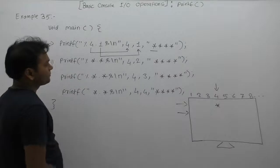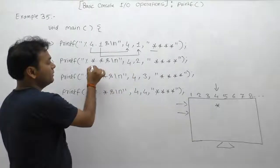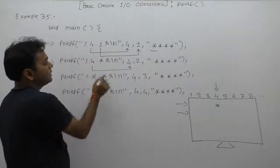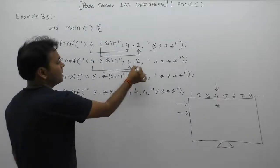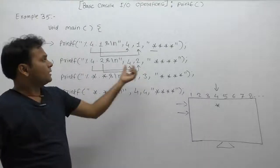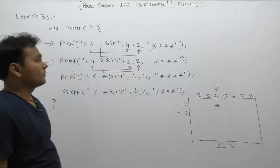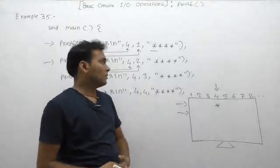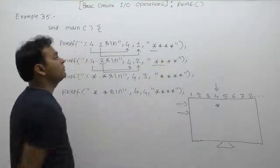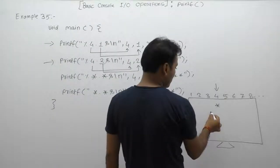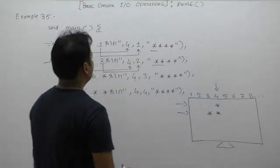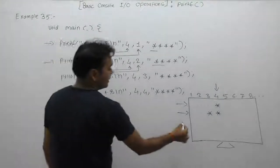According to the second printf, in place of the first star we substitute the first argument value as four, and the second star is replaced by the second argument value two — it becomes like percent four point two s backslash-n. The string value is four asterisks, but this will display only the beginning two characters, which is two asterisks, displayed in a field of width four. According to backslash-n, the cursor moves to the next line.